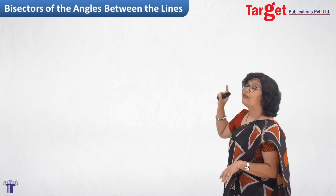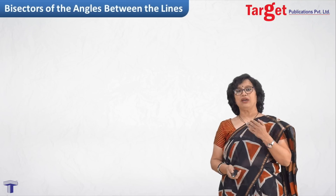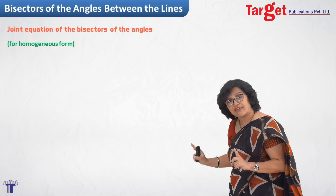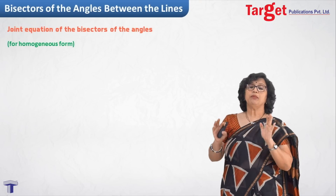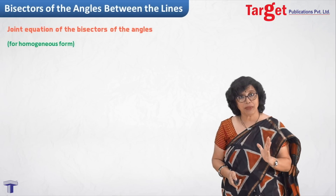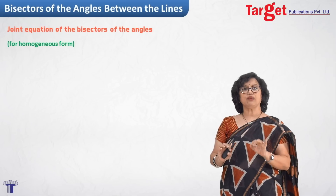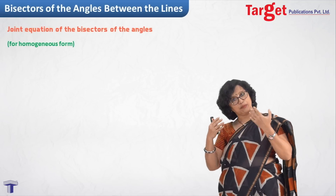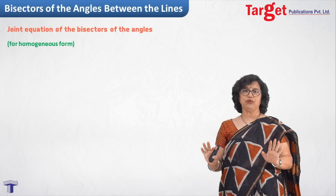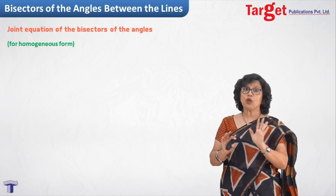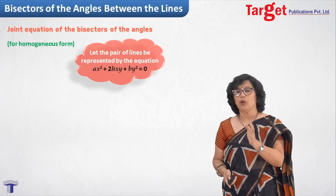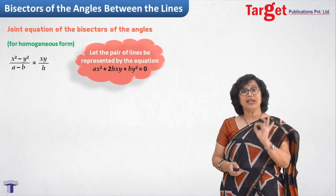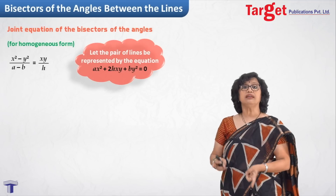Next, we want to find the equations of the bisectors of the angles between a pair of lines. For the homogeneous form ax² + 2hxy + by² = 0, the joint equation of the bisectors — only the formula-relevant part — is: (x² - y²) / (a - b) = xy / h. This is the standard formula for the joint equation of the angle bisectors.